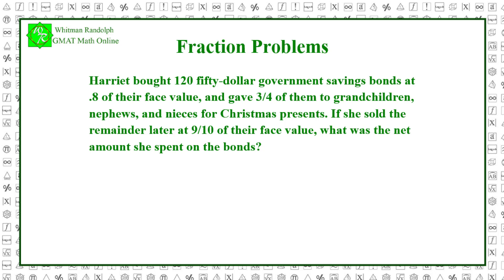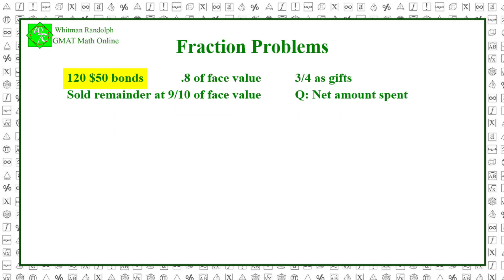Let's summarize the pertinent facts of this problem. She purchased 120 $50 bonds at eight-tenths of face value, gave three-quarters of them as gifts, and then sold the remainder at nine-tenths of face value. What was the net amount she spent? Here are some possible answers.